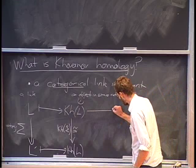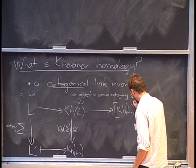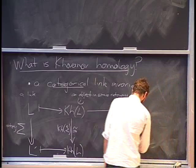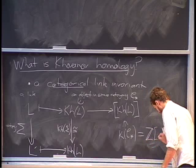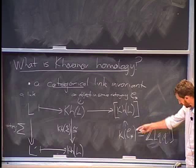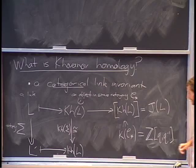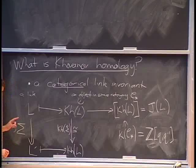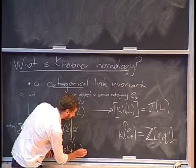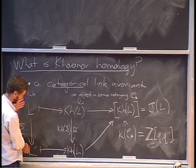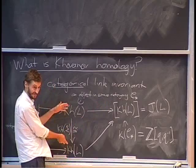We can look at this object in the category associated to some link and look at its representative in the Grothendieck group of the category. The Grothendieck group is actually just Z[q, q-inverse], and if we identify the Grothendieck group with Z[q, q-inverse], then this representative is exactly the Jones polynomial of the link. This is the sense in which Khovanov homology categorifies the Jones polynomial. Isotopic knots have the same Jones polynomial but isomorphic Khovanov invariants.